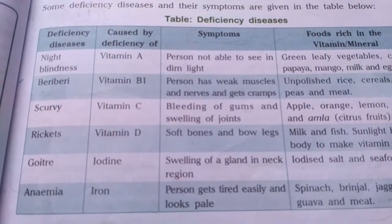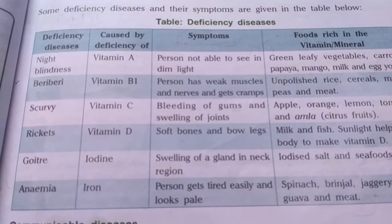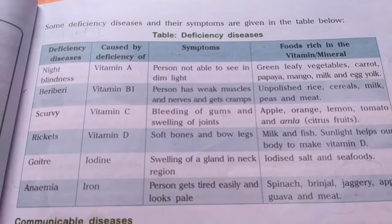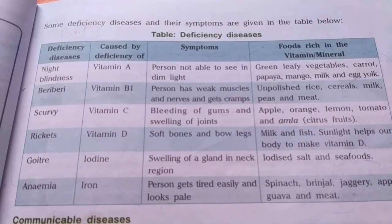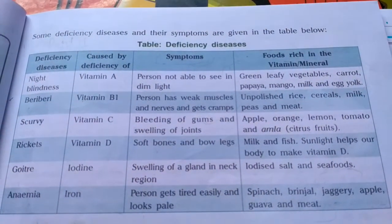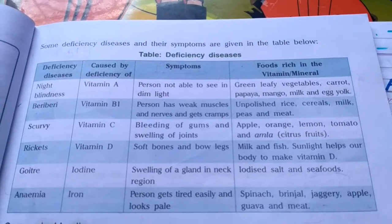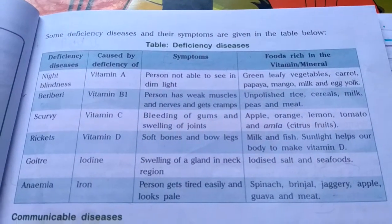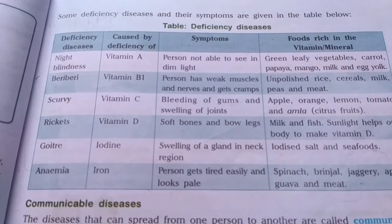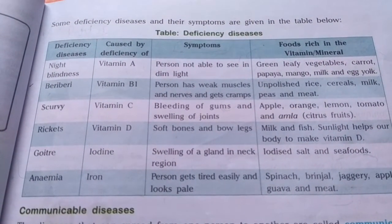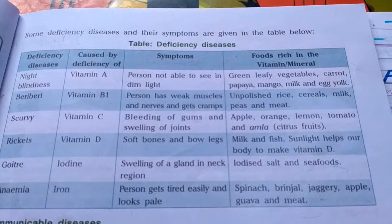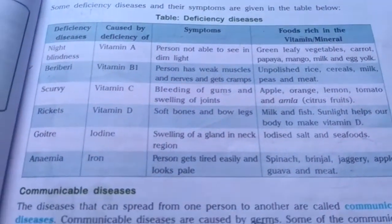Beriberi can be cured by eating unpolished (brown) rice, cereals, milk, peas, and meat. Scurvy is caused by deficiency of vitamin C; symptoms are bleeding of gums and swelling of joints. It can be cured by consuming apple, orange, lemon, tomato, and amla — all citrus fruits are a rich source of vitamin C.